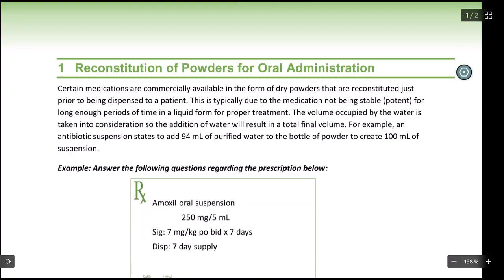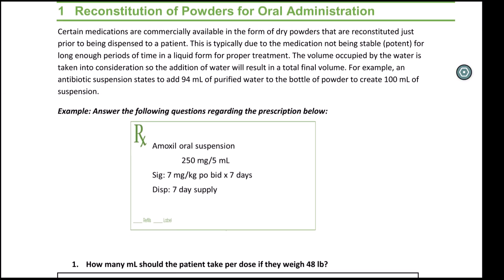Let's look at some examples of calculations associated with these types of powders, not only how to reconstitute them but how the prescriptions will look as well. Let's take a prescription example here. This one shows a prescription for an amoxicillin oral suspension. It's the concentration of the suspension. This is a commercially available product. It's 250 mg per 5 mL.